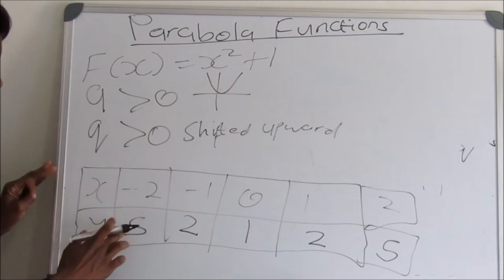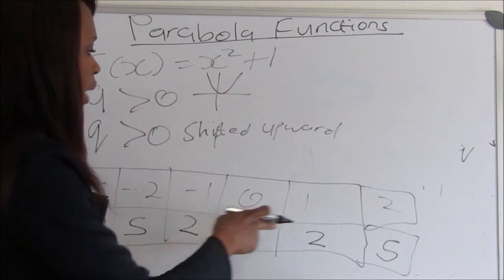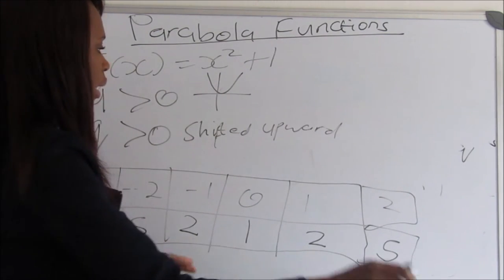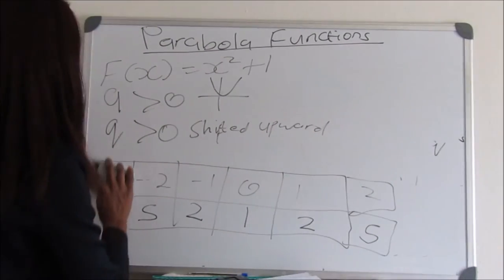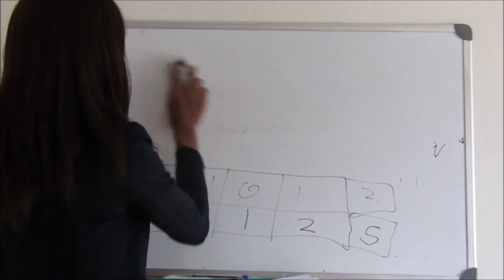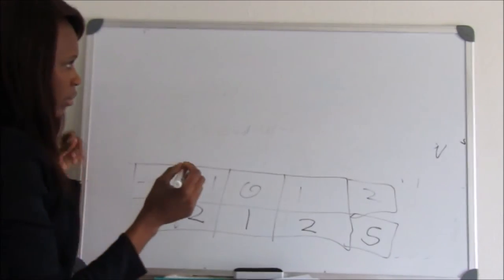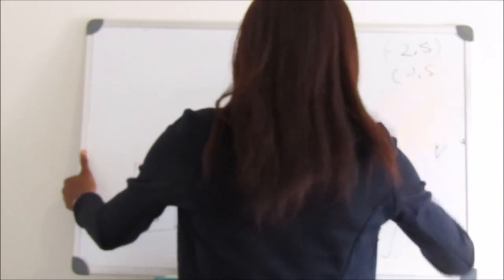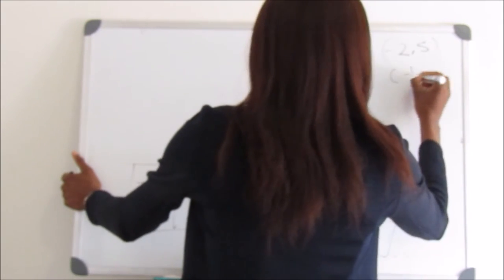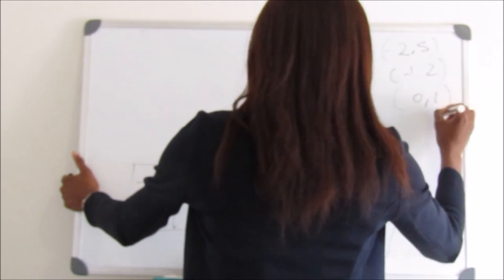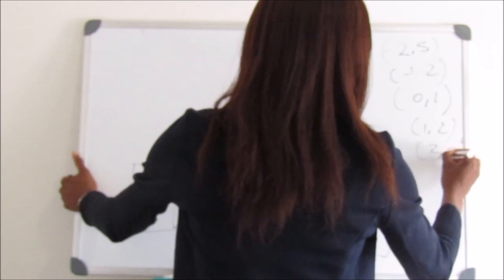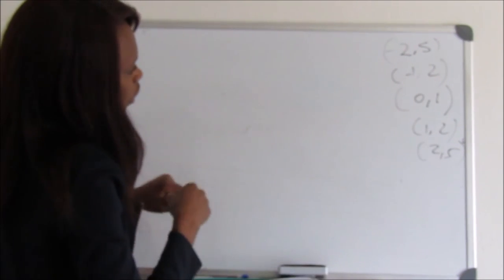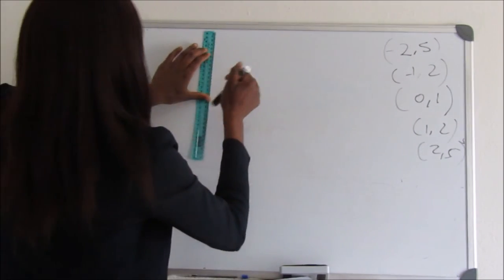So our coordinates are: (-2, 5), (-1, 2), (0, 1), (1, 2), and (2, 5). Let me erase the table to get more space to draw the graph. These are the coordinates we will use to plot this parabola.